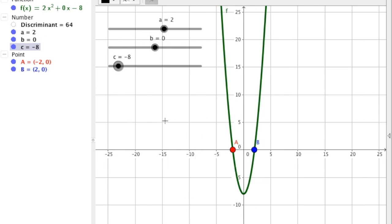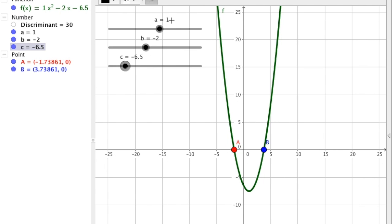I had a discriminant of positive 64 when a was 2, b is 0, c is negative 8, with roots negative 2 and positive 2. I ended up with a discriminant of 30 with an a of 1, b of negative 2, and c of negative 6.5, and with roots about negative 1.738 and 3.7386.